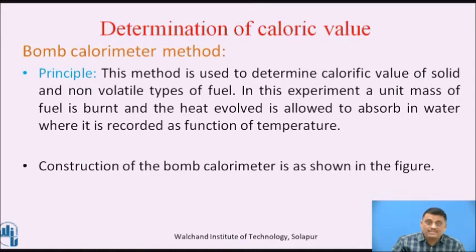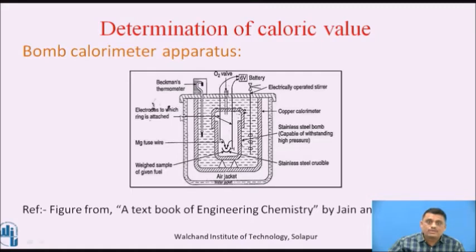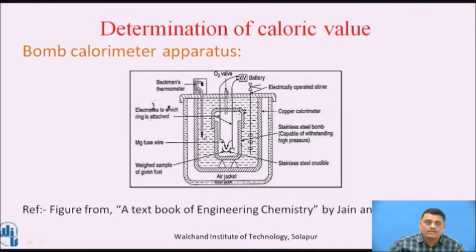Construction of the bomb calorimeter is as shown in the figure. The outer part is called the water jacket, followed by a gap called the air jacket. This is the copper calorimeter which is filled with water. Inside that, a stainless steel bomb is inserted, which is divided into two parts: the lid and the body. The lid has a provision of two electrodes. During its use, these two electrodes are connected to a battery. At the lower portion, these electrodes have a provision of either platinum or magnesium wire, to which a crucible is attached. In that crucible, we place a very small sample of the fuel whose calorific value we are going to determine. A thermometer is used to record the temperature of water before and after combustion, and a mechanical stirrer is also present.